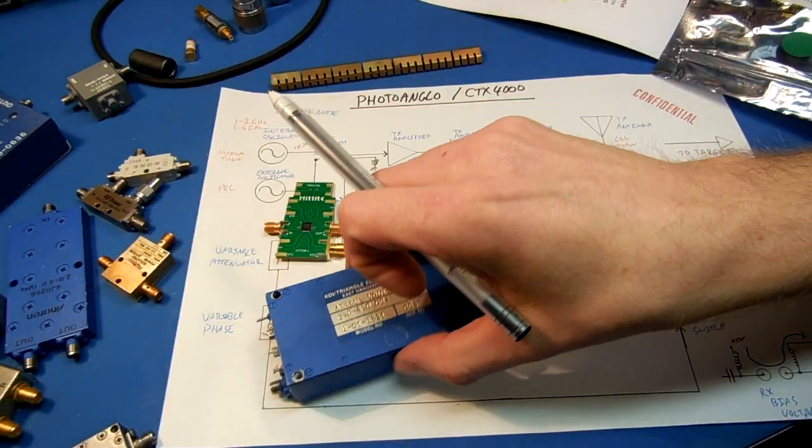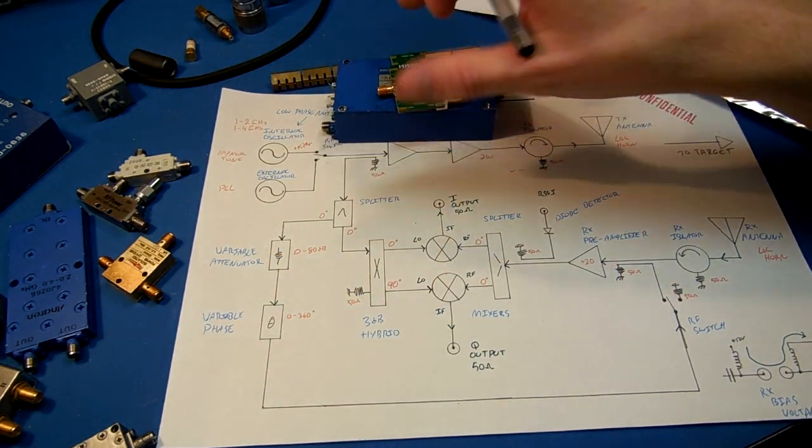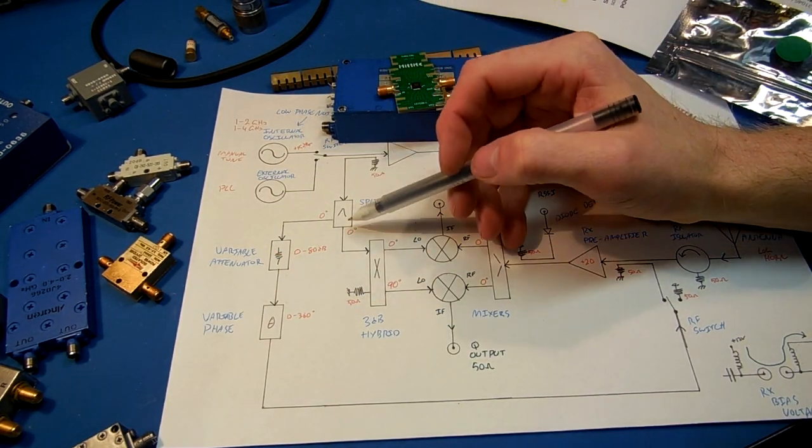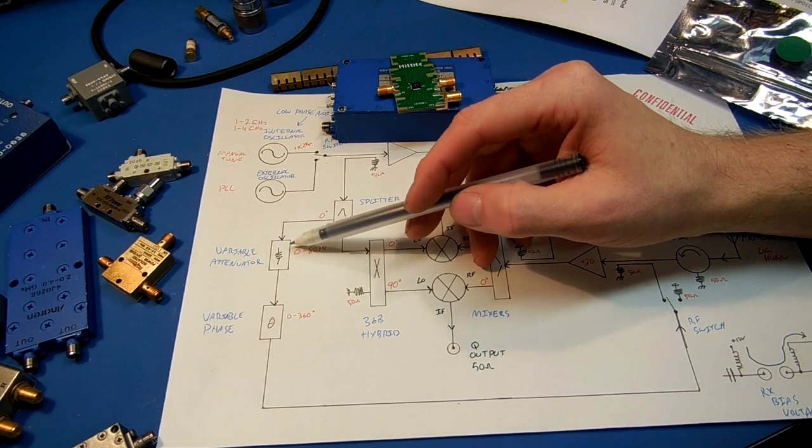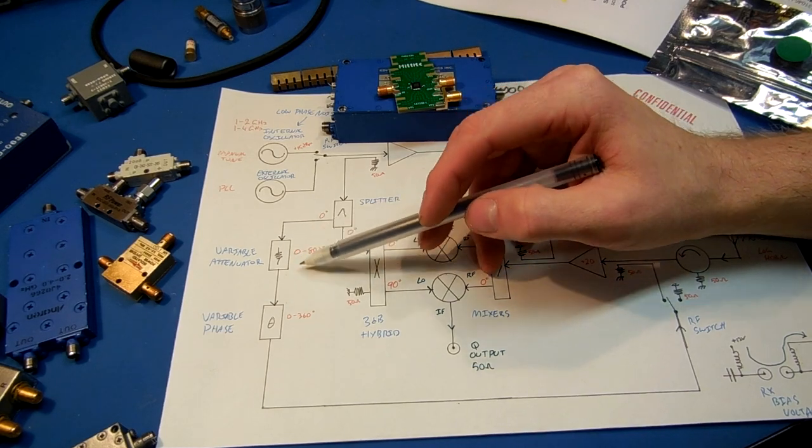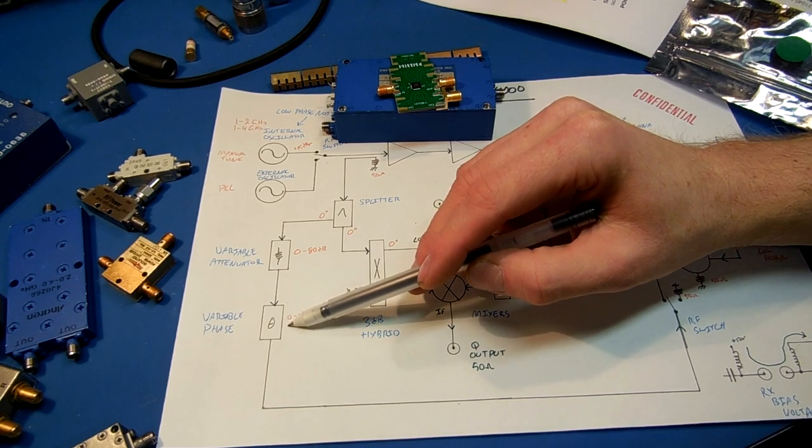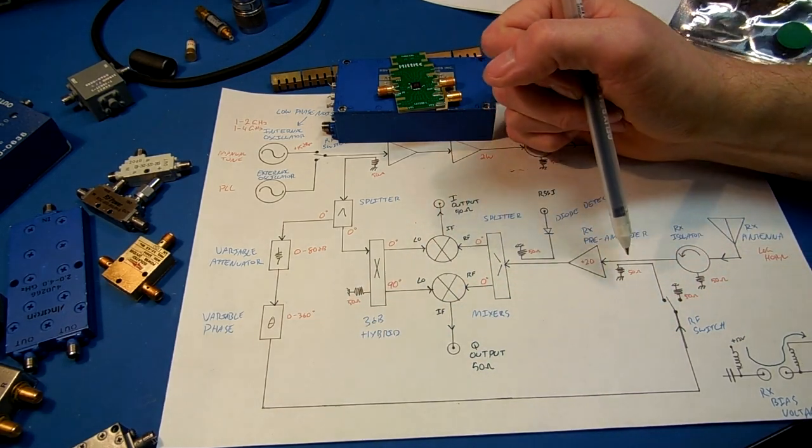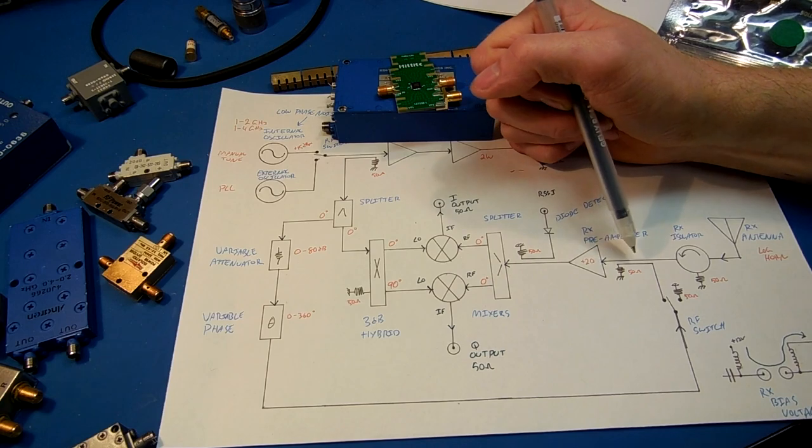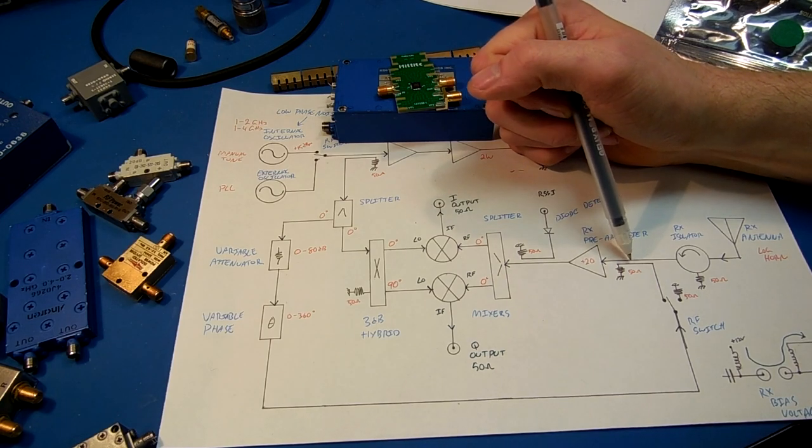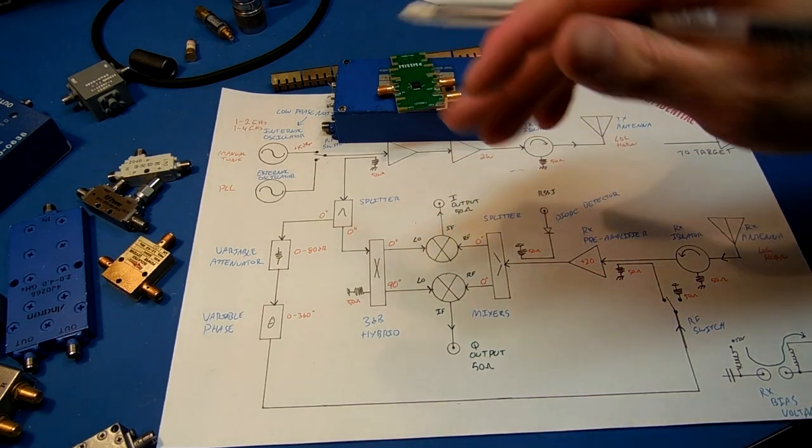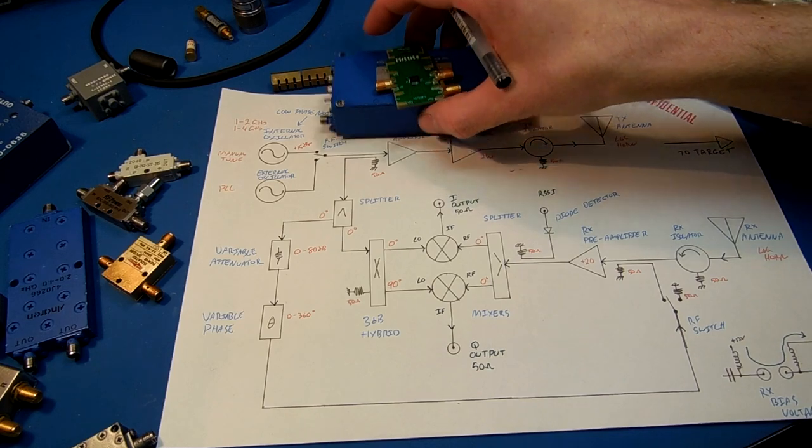We're gonna attenuate that down, maybe by 80 dB or so. Then we're gonna phase shift it 180 degrees. That's gonna get fed back into our receive side. That's gonna cancel any static reflected energy. I'll describe that in a little more detail in a bit.